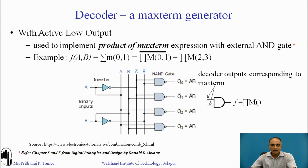You can also implement product of maxterms with an external AND gate. For related theory please refer to chapters 3 and 5 from Digital Principles and Design by Donald Givone. Here one example is shown: f(A,B) equals sum of minterms 0 and 1, which can be rewritten as product of maxterms 2 and 3, or also as product of maxterms 0 and 1 and its complement. In this case you connect decoder outputs corresponding to the maxterms as inputs to the external AND gate, so you connect outputs Q0 and Q1 as inputs to this external AND gate.